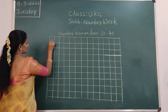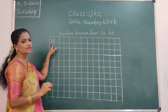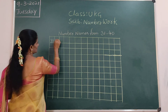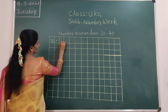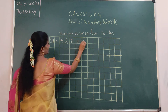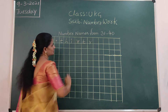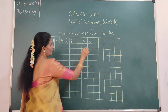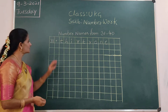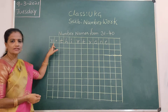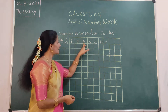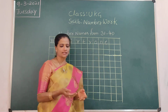Yes, 31. In the first box, write 31. Put one small line. THIRTY — T-H, I-R, T-Y — ONE — O-N-E. That is 31. Now 32.